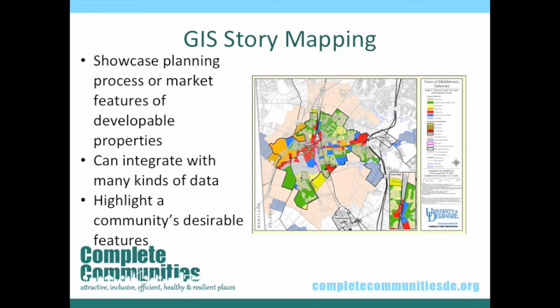StoryMaps provide a new avenue for local governments and economic development organizations to showcase a planning process or market features of developable properties. This easy-to-use technology can integrate available, open-access GIS data, such as local infrastructure, bus routes, cell towers, census data on populations and demographics, and other interesting facts. StoryMaps can be used to market available properties in downtown infill areas, business parks, or other designated growth areas. They may also highlight the location of capital improvement projects, must-visit restaurants and breweries, farmers markets, community garden locations, local park systems, areas of low-impact development, and much more.